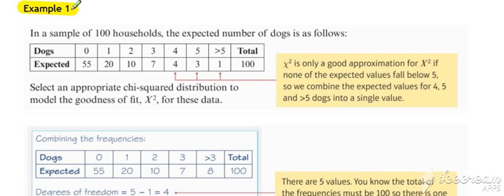Pulling all of that information together for our first example: a sample of 100 households, the expected number of dogs is as follows. There are our expected frequencies.